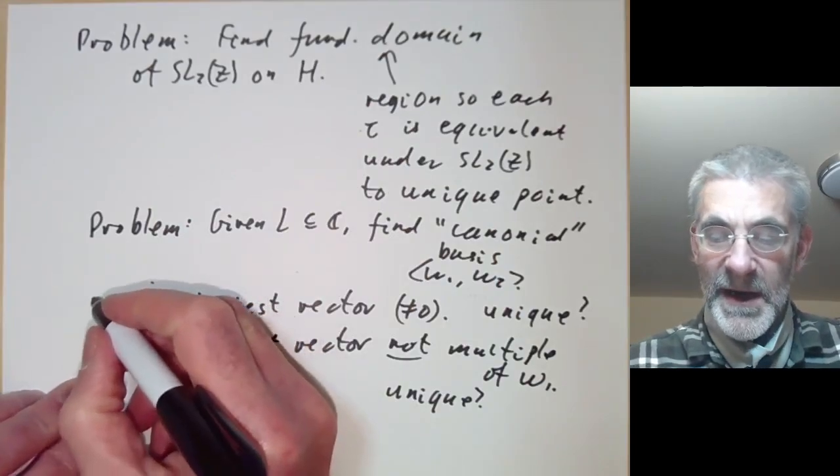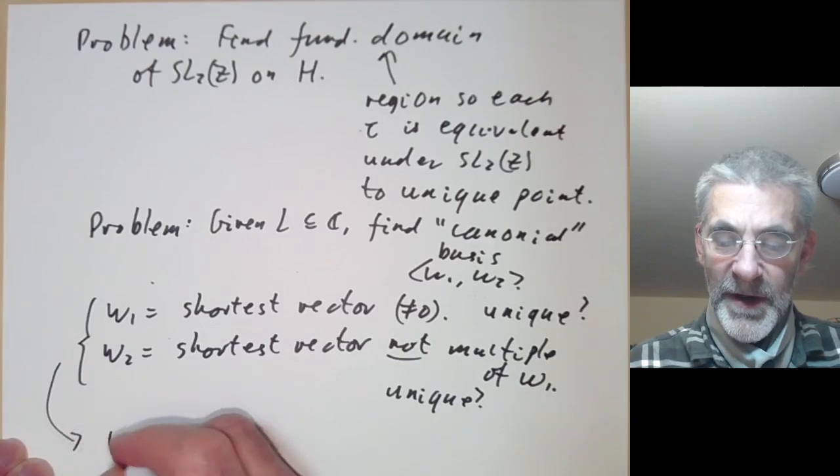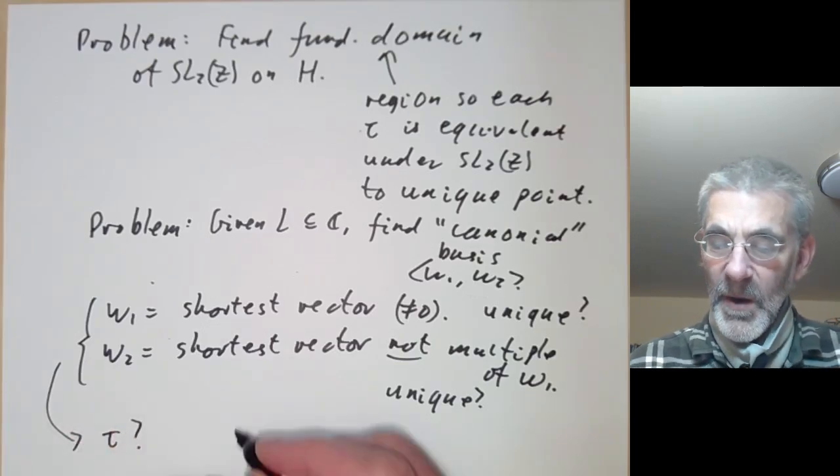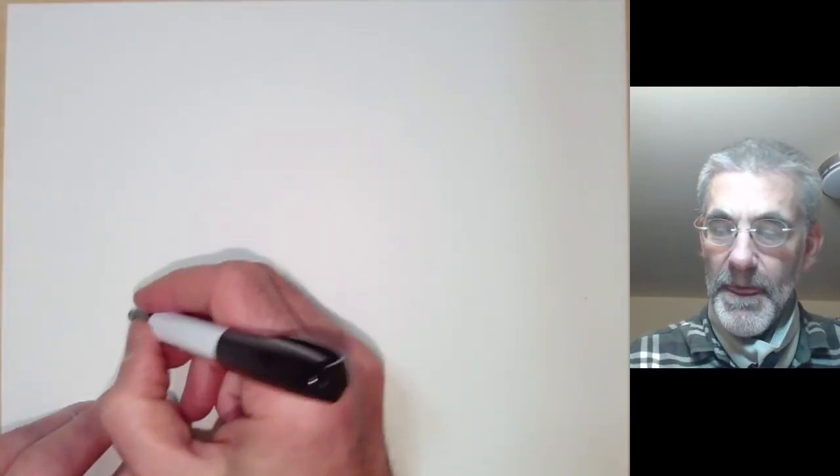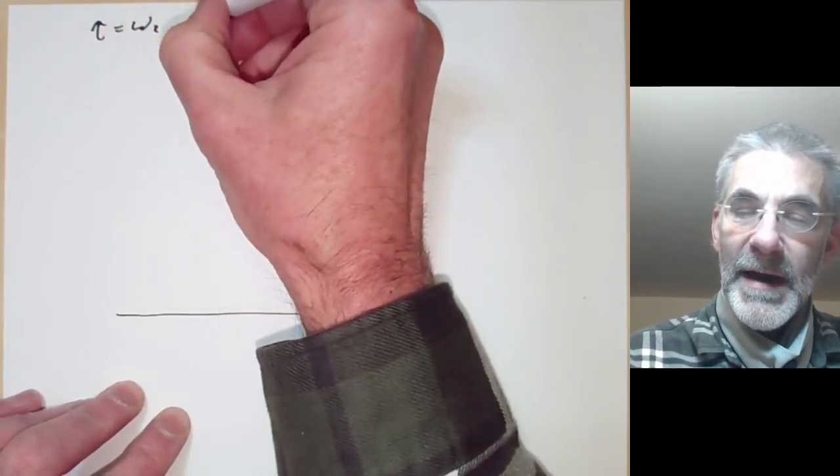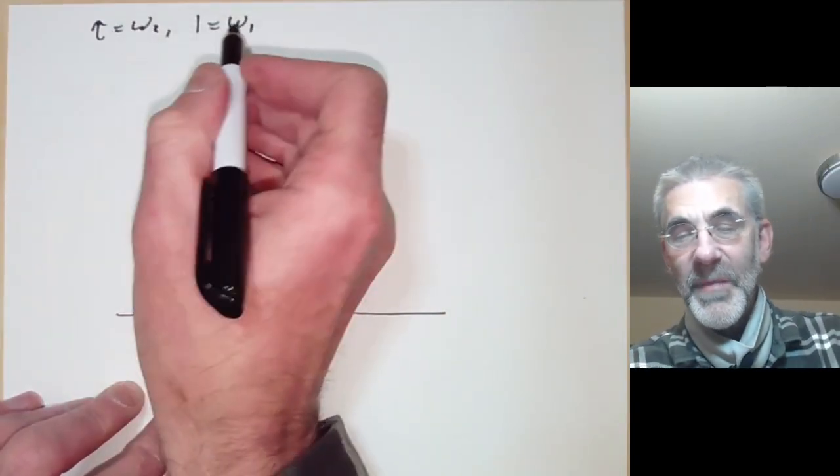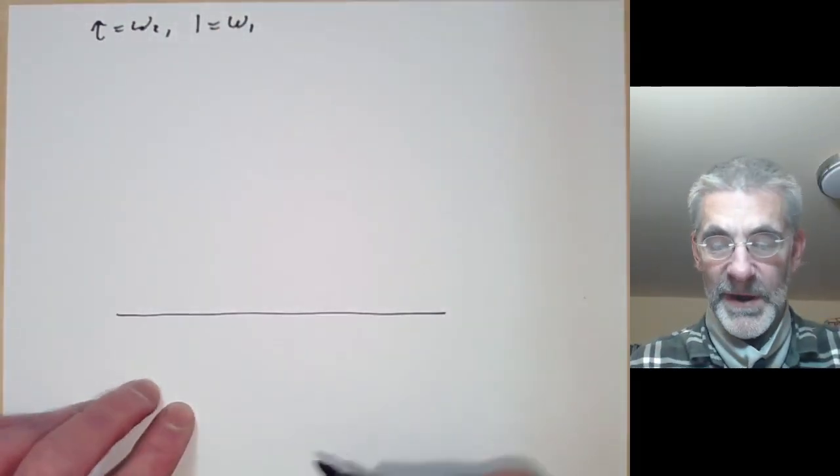So let's see what condition do these two conditions have on tau. Well let's draw a picture. So we can take, well by rescaling we can take tau to be omega-2 and 1 to be equal to omega-1, because we can just divide everything by omega-1 to make omega-1 equal to 1.